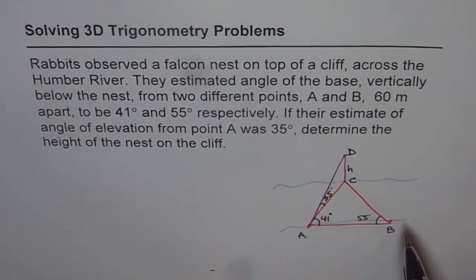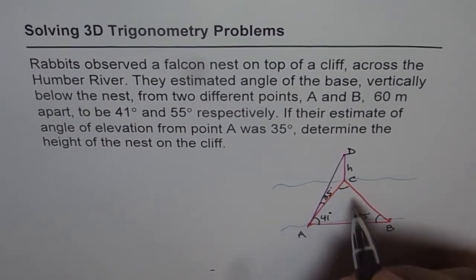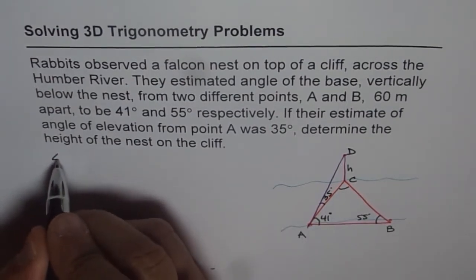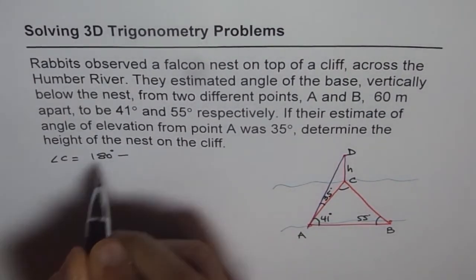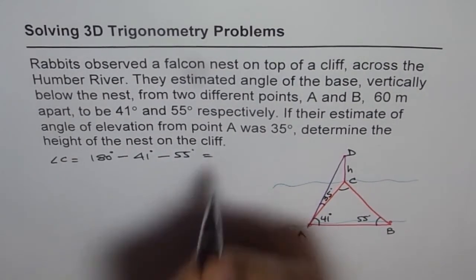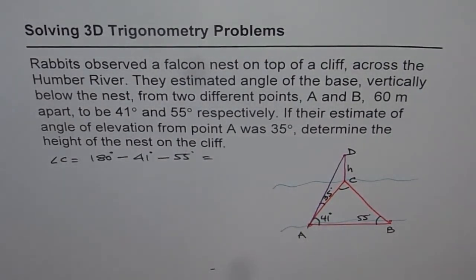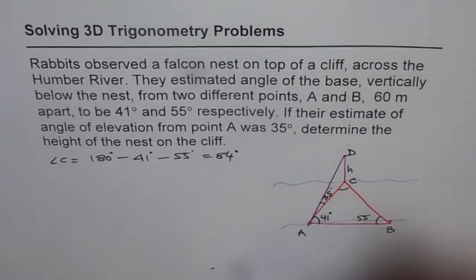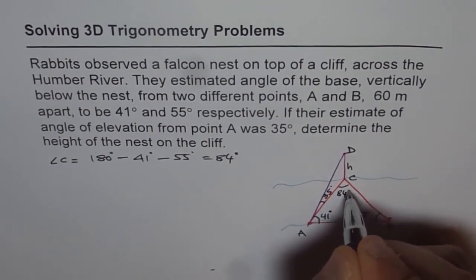In triangle ABC, we can always find angle C. Angle C is 180 minus 41 minus 55. So we can write: angle C equals 180 degrees minus 41 degrees minus 55 degrees. Using the calculator, that gives us 84 degrees. So we find this angle to be 84 degrees.